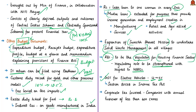A new Section 80EEB has been inserted into the Income Tax Act. This section aims to provide a deduction of ₹1.5 lakhs on interest on loans obtained from financial institutions for the purchase of an electric vehicle. This is a huge support offered by the government to urge citizens to adopt cleaner forms of energy to minimize pollution.